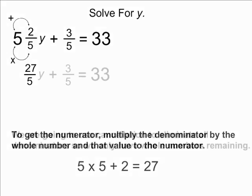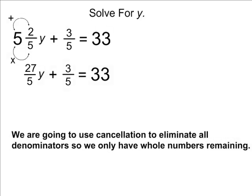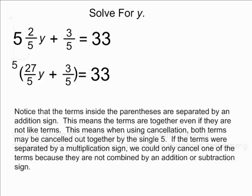Now that we have renamed our mixed number as an improper fraction, bring down the rest of the equation. Next, I am going to take the two terms on the left-hand side of our equation and cancel out both of their denominators. In this case, both of the terms have a denominator of 5. Because both terms are being divided by 5, we are going to do the opposite of that, which is to multiply by 5.